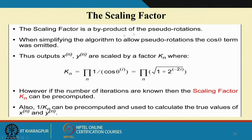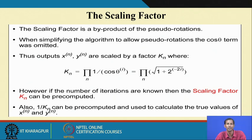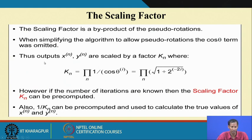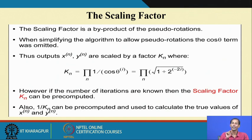The scaling factor is a byproduct of the pseudo rotation. Because of pseudo rotation, from the original circular rotation, the corresponding vectors have been increased — the magnitude of the vectors has been increased. When simplifying the algorithm to allow the pseudo rotation, the cos theta term was omitted. Thus the outputs X_n and Y_n are scaled by a factor K_n, where K_n is the summation of 1 by cos theta_i. Why is this being scaled? Because we omitted the cos theta term.